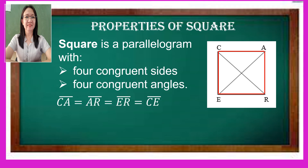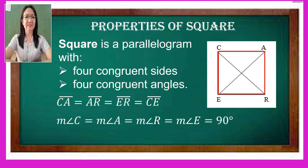Similar to rectangle, the angles of a square are congruent and all measure 90 degrees. So the measure of angle C is equal to the measure of angle A, and is equal to the measure of angle R, and also equal to the measure of angle E — which are all equal to 90 degrees.